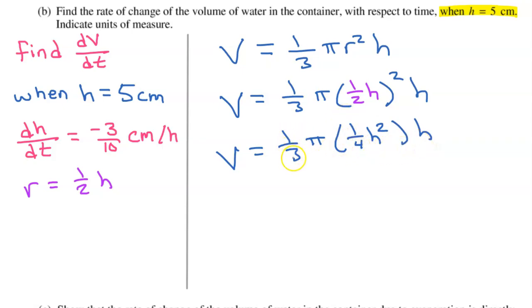One-fourth times one-third is one-twelfth. So I'm going to go ahead and write this as pi over 12, right? Because that's your one-twelfth times pi. h to the third power. That's a nice, tidy formula.